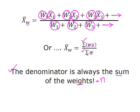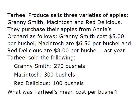So let's look at an example. Tar Heel Produce sells three varieties of apples: Granny Smith, Macintosh, and Red Delicious. They buy all of their apples from Annie's Orchard. Annie's charges them $5 for a bushel of Granny Smiths, $6.50 a bushel for Macintosh, and the Red Delicious costs them $8 a bushel.